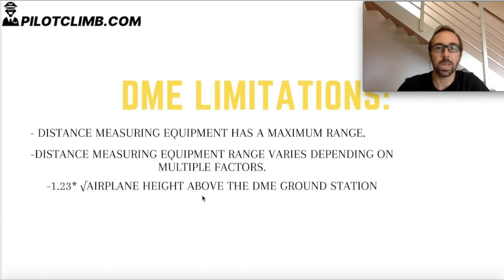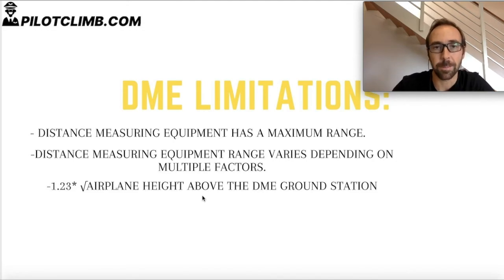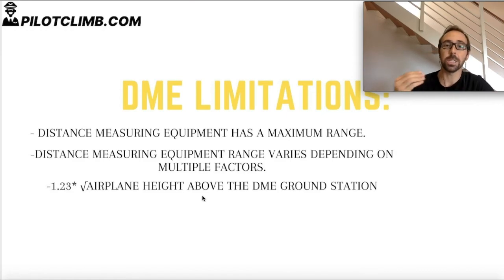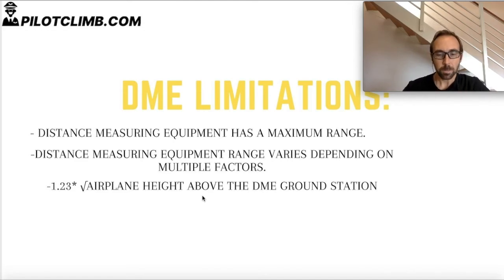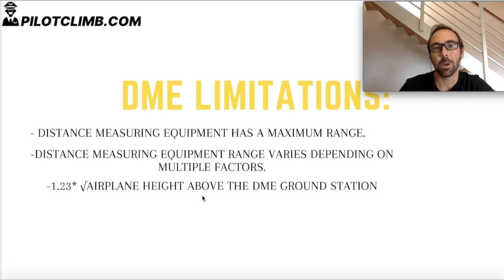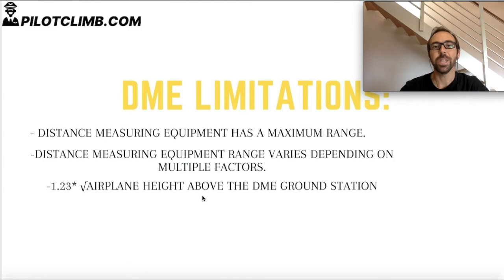This is an approximate number, not an exact figure, but it gives a useful idea. For instance, if you are 600 miles away from the DME station, you will not receive information from it. Knowing this range is important because if you select the frequency too far away, you might receive information from a different DME that is completely off your route, causing confusion. You might think you are receiving information from your intended DME, but you are actually getting data from another station — possibly one that is behind you — leading to incorrect situational awareness.